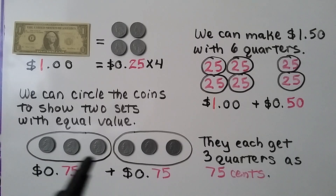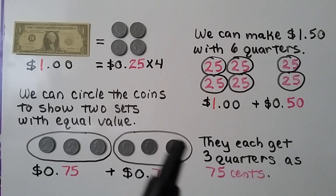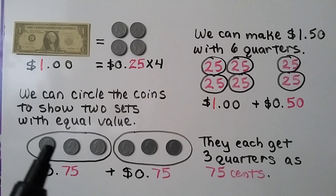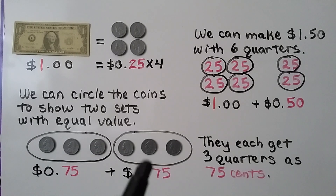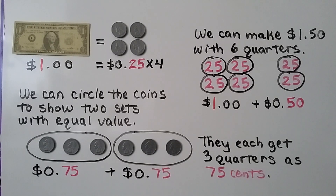We can circle the coins to show two sets with equal value. We have three quarters here and three quarters here — that's six quarters. One person can get three quarters, which is seventy-five cents, and the other person will get three quarters, which is seventy-five cents. They'll each get three quarters, seventy-five cents, and they've divided it evenly.